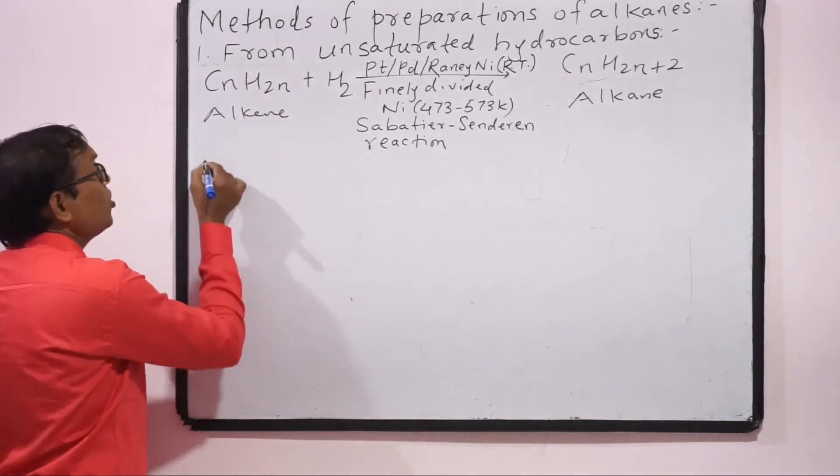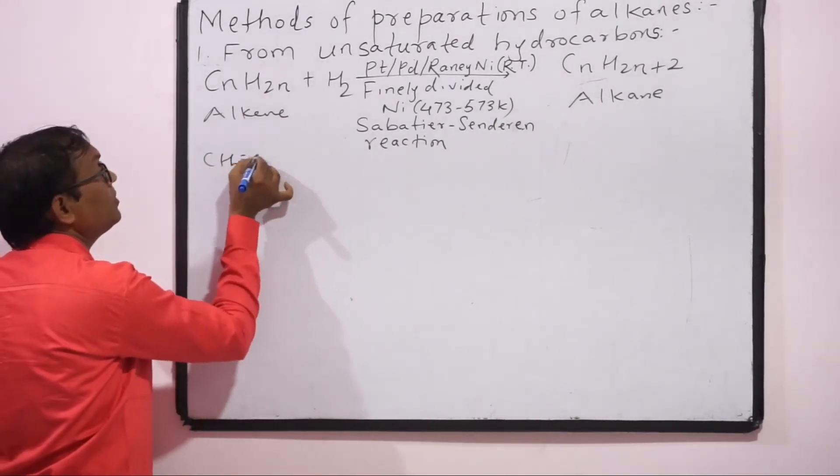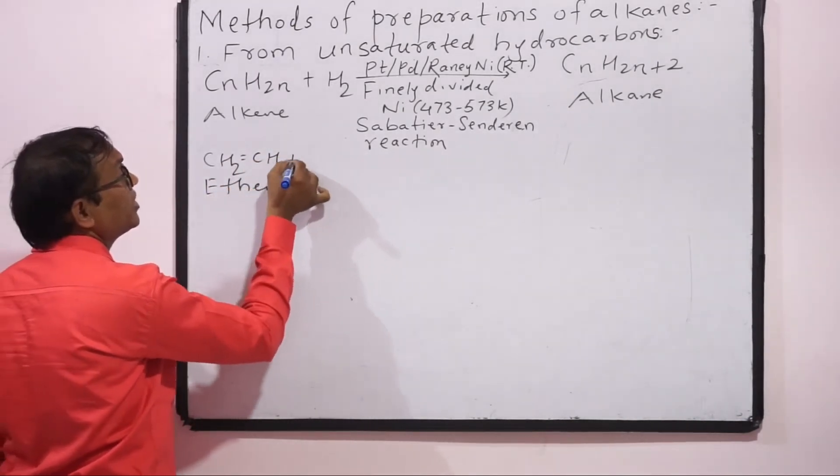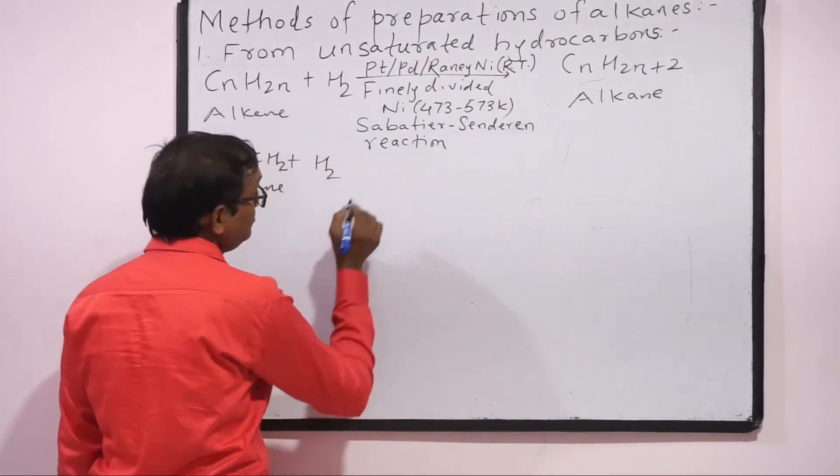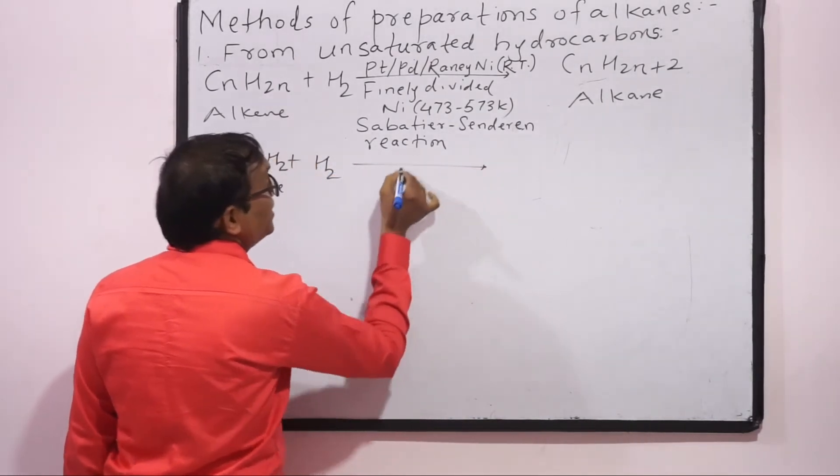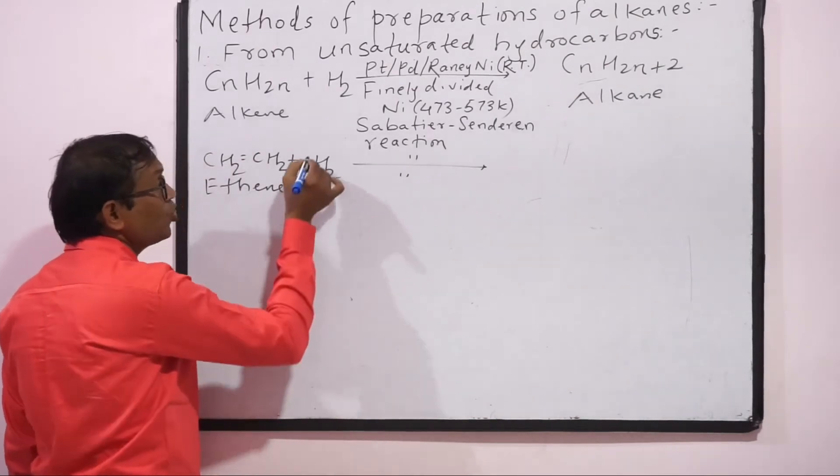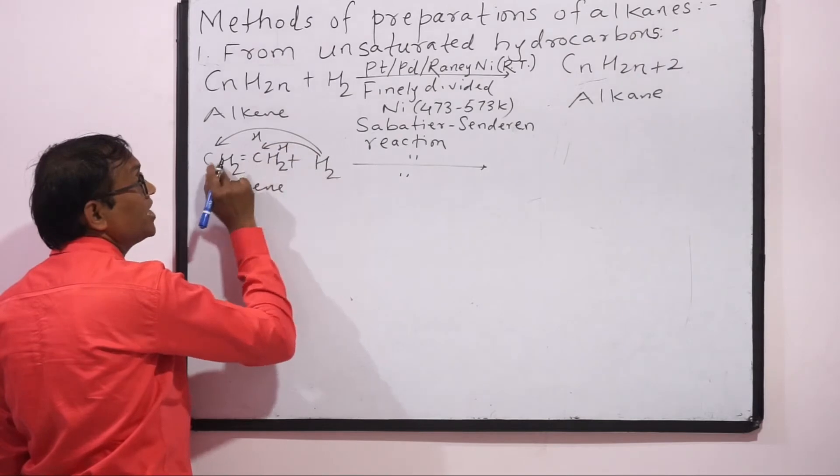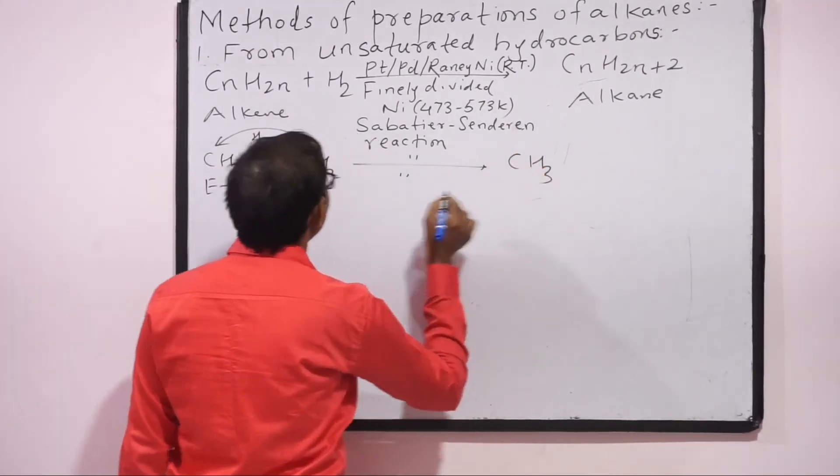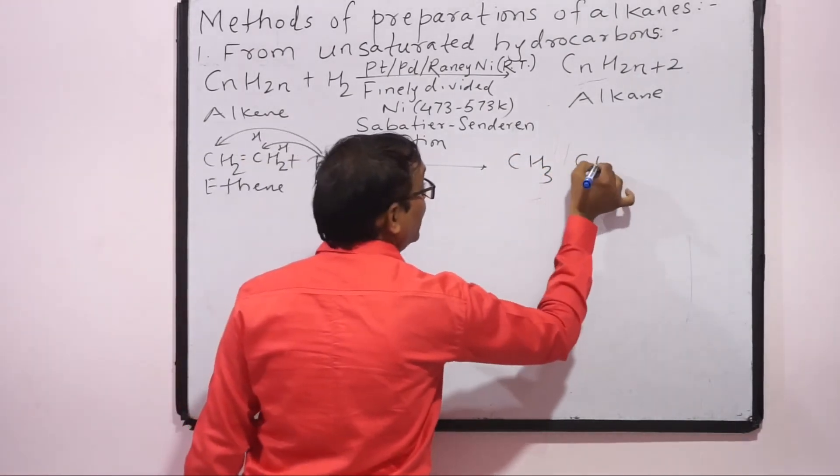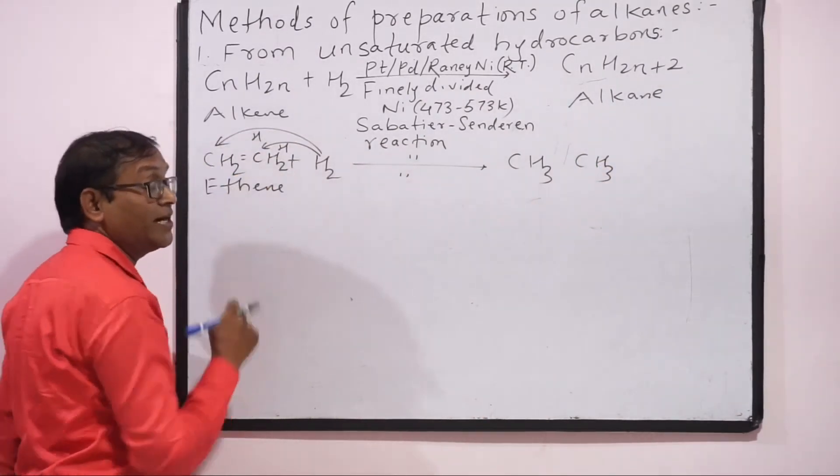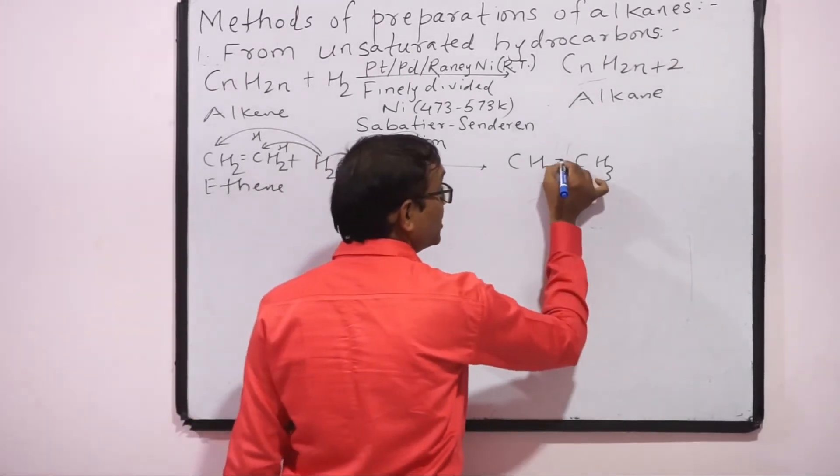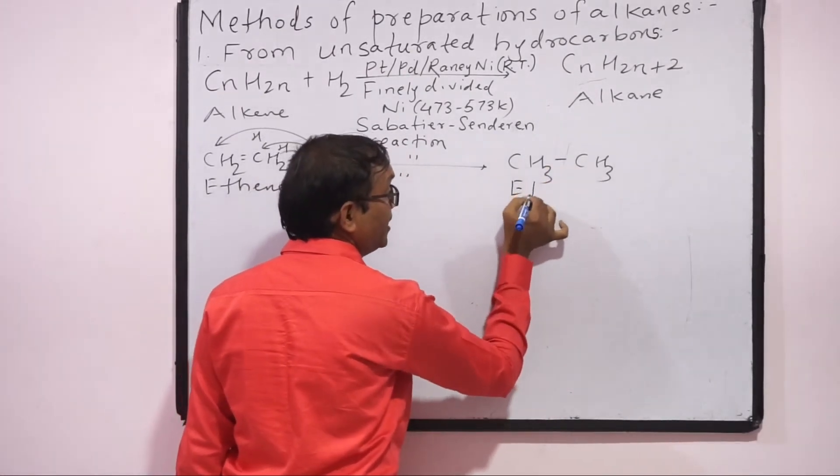Example alkenes ke: CH2 double bond CH2, what is the name? Ethene. Isse hum heat karenge with hydrogen gas. Product kaise baneega? Yamme se koye bhi hum yahaan use karenge toh one hydrogen yahaan jaayega, dusra hydrogen yahaan pe add hoga. CH2 plus H becomes CH3. Yahaan pe bhi rahega CH3. Ab dono carbon pe 1-1 hydrogen add ho ga. Therefore double bond changes to single bond. What is the name? Ethane.